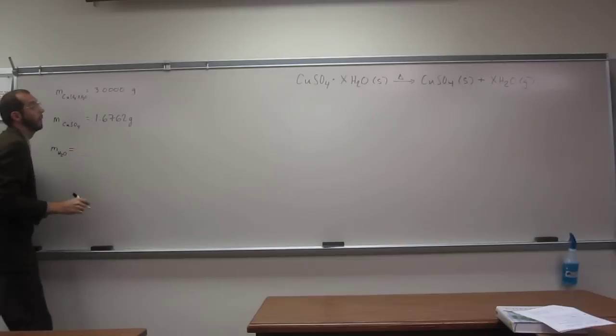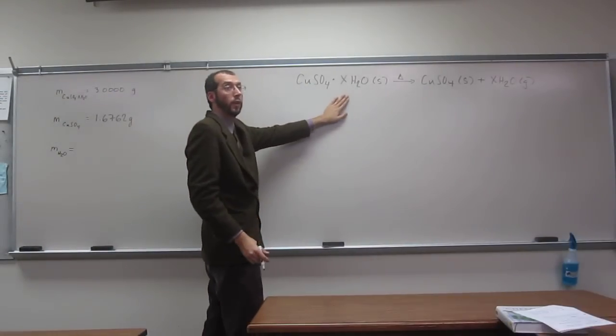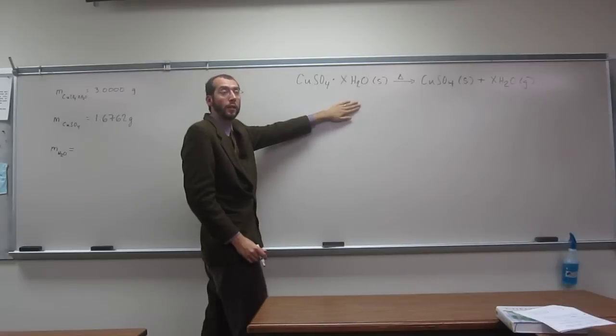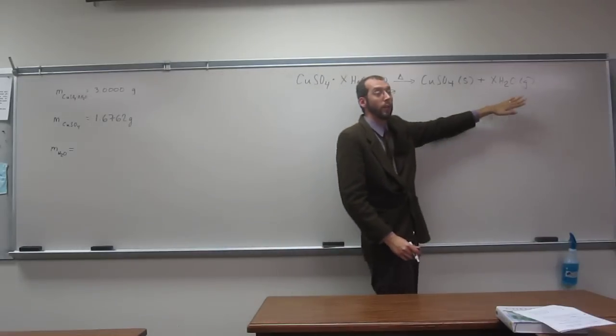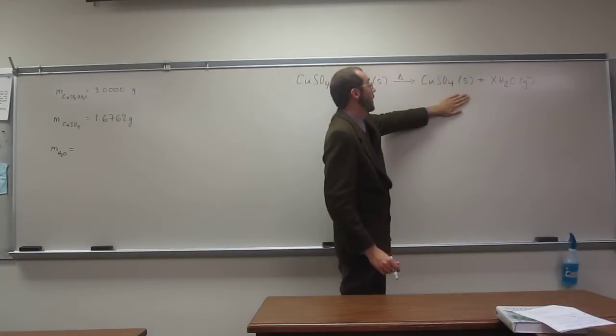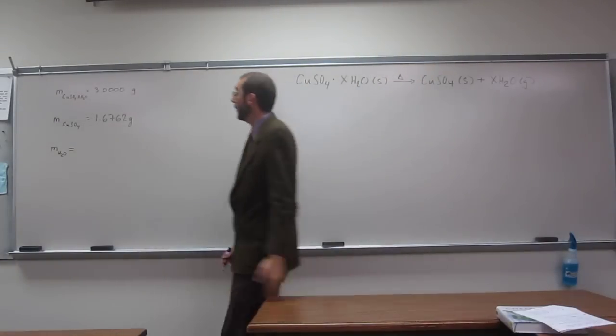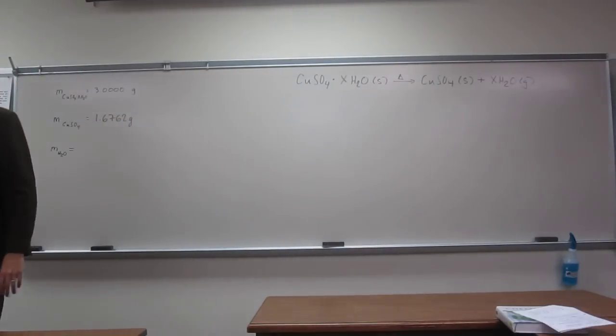Right? Like why? Because of the law of conservation of mass, right? The same mass has to be on this side, this has to be on this side. So if we've got this starting out, and this ending up, this is gone, right? So the mass of water, we can figure that out.